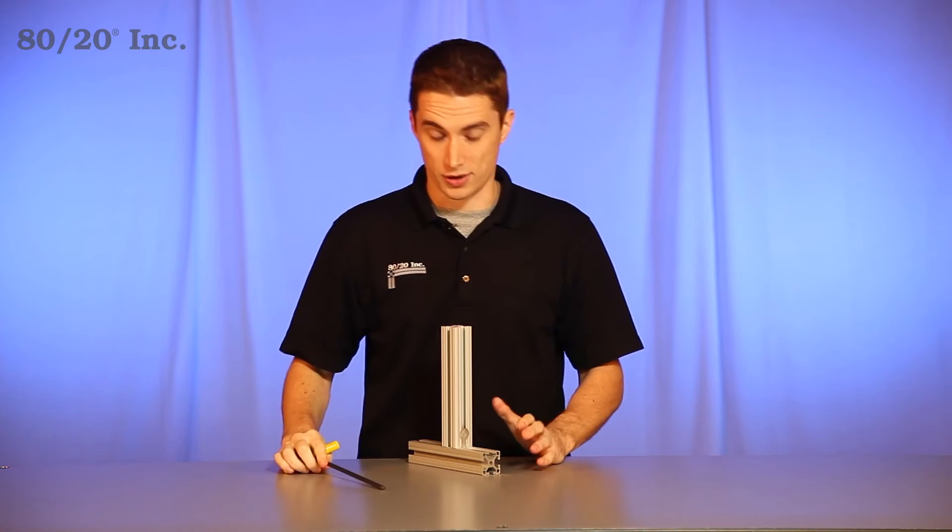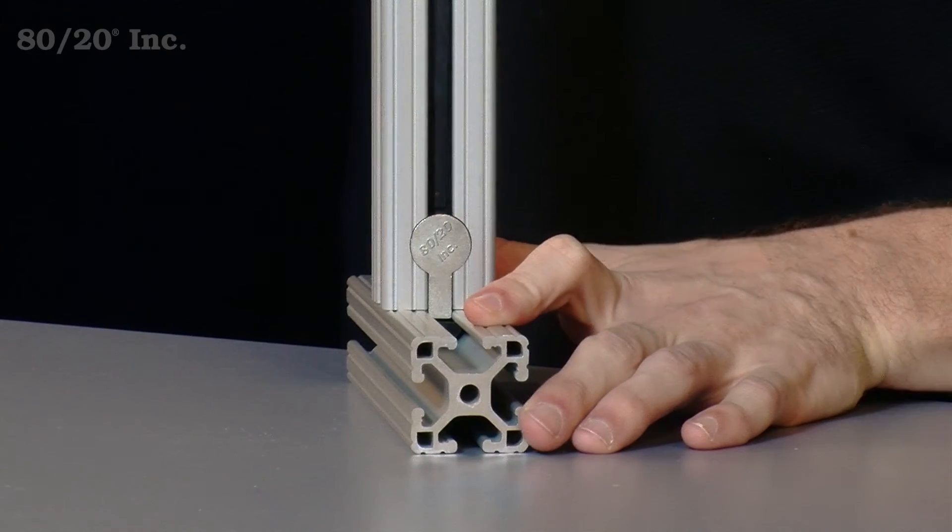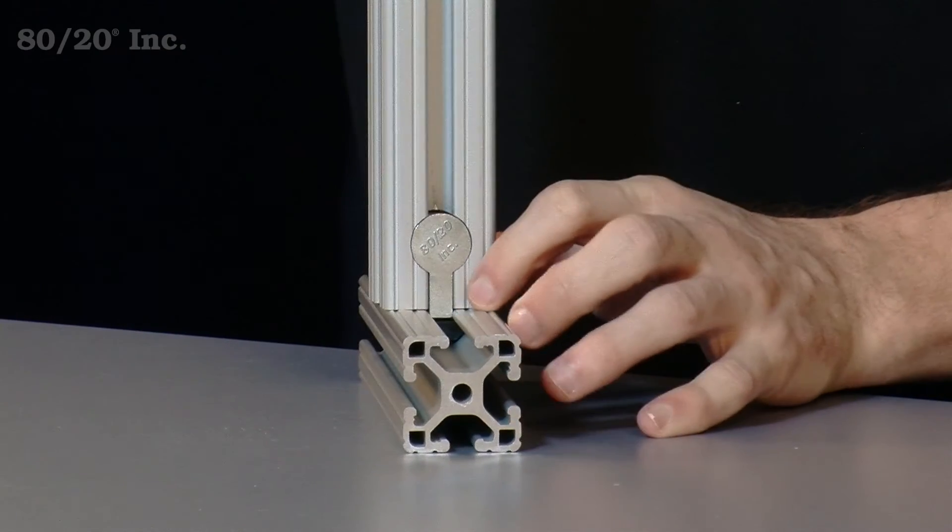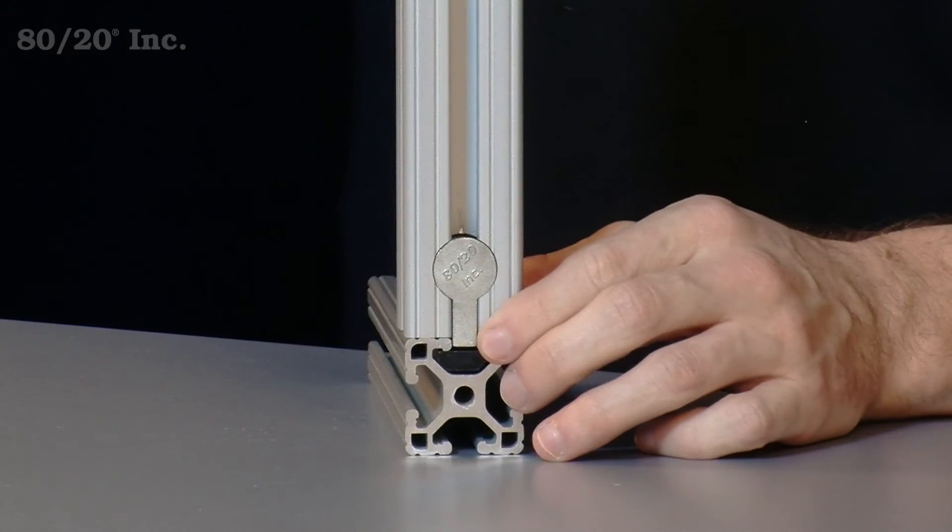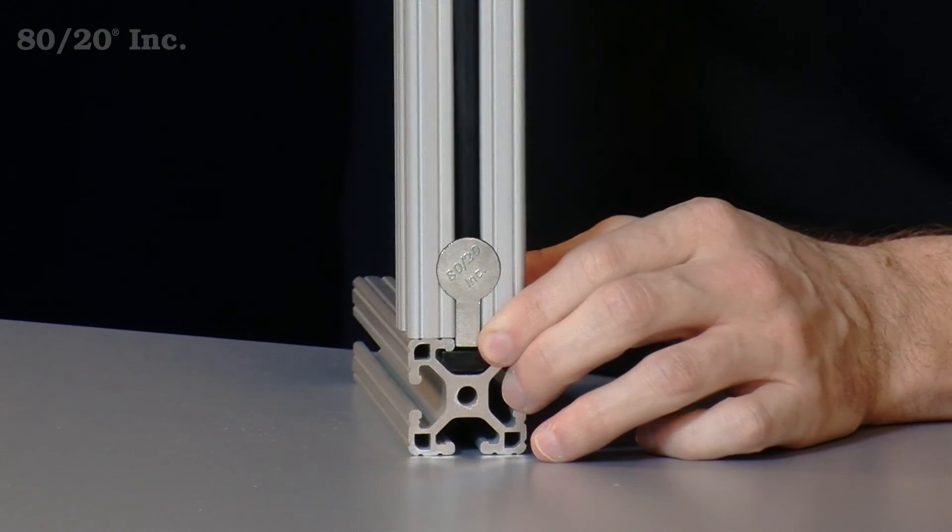Now the great thing about the anchor fastener is you can loosen it up and adjust it to any position on the bar that you need. Simply loosen it up and tighten it back down with your t-wrench.